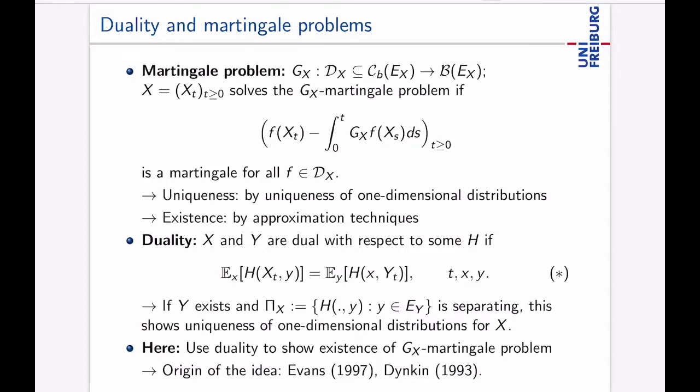And of course this is trivial if H is very simple but if H has more structure, in particular if this here, so you fix y, you treat this as a function of x and this here is separating, then you can see that the right hand side here, if Y exists, gives uniqueness of the one-dimensional distribution. So it gives uniqueness of the distribution of Xt which then by this claim here shows uniqueness of the martingale problem. So that's what you usually do.